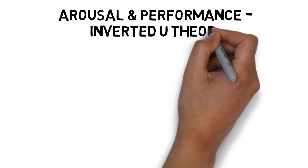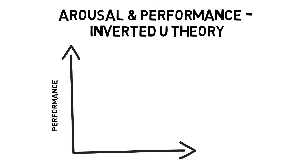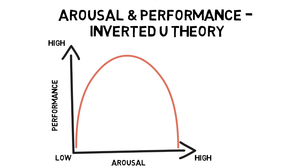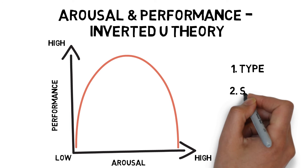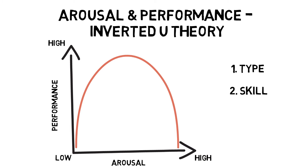Inverted U theory suggests that performance improves with arousal up to an optimal level of arousal. After this point, performance will start to deteriorate. Optimal arousal depends on the type of activity — gross skills require high arousal, whereas fine skills require low arousal — the skill of the performer, where a more skilful performer can sustain a higher optimal level of arousal, and the personality of the performer, where the more extrovert the performer, the higher the arousal levels needed to produce optimal performance. However, a criticism of this theory is that when arousal is too high, there is not always a gradual drop in performance; sometimes it can be a sudden drop.